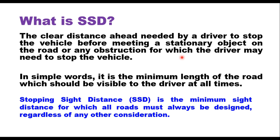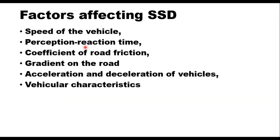It is the near worst-case distance a vehicle driver needs to be able to see in order to have room to stop before colliding with something on the roadway. It may be a pedestrian, an animal, a stopped vehicle, or any other road blockage. In general, stopping sight distance depends on several factors.